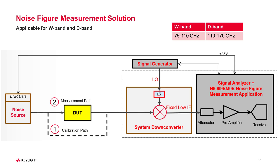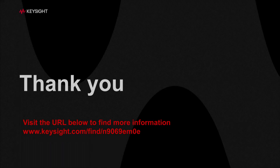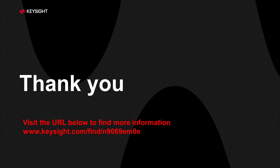The Keysight noise figure measurement solution can perform high-accuracy W-Band and D-Band noise figure measurements. Once calibration is done, you can make a one-button W-Band or D-Band noise figure measurement on your DUT and get both noise figure and gain results to quickly evaluate your DUT performance. For more information, visit www.keysight.com/find/N9069EM0E. Thank you.